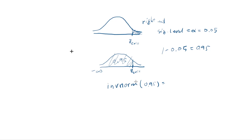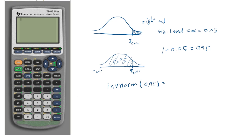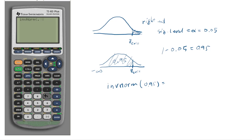So that's quite straightforward, and this is not that different from TI-84. You go to second distribution, inverse norm, put in 0.95, press enter, and that's how you get that.